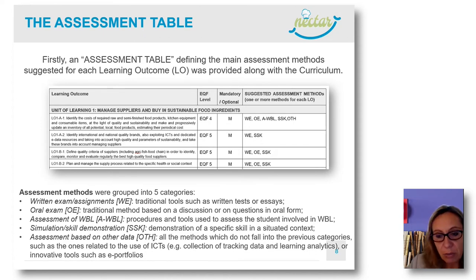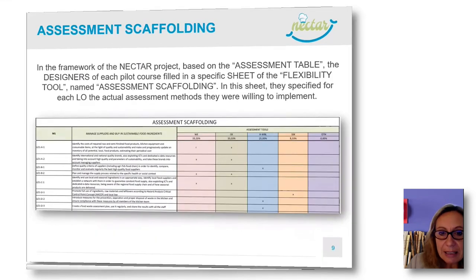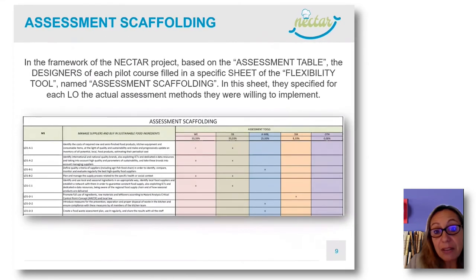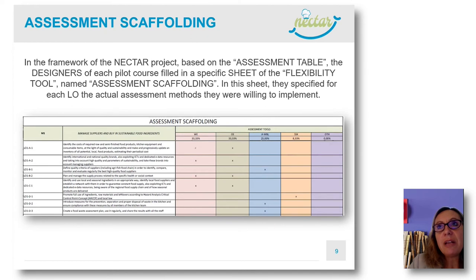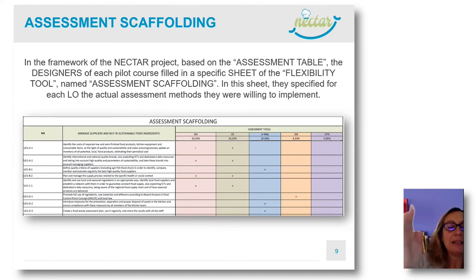For each learning outcome, a suggested assessment method was provided in this table at the level zero — at the level of the curriculum, once for all. Then we have the assessment scaffolding — the sheet just shown five minutes ago in the flexibility tool. What is the difference? In the previous table we have a fixed table, valid for everybody, saying what we suggest as assessment method for that learning outcome.